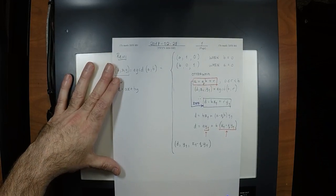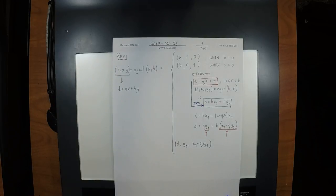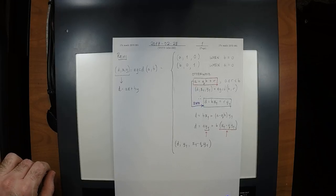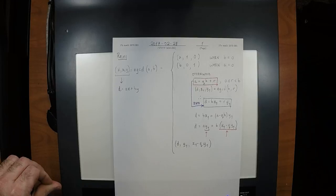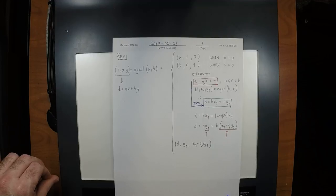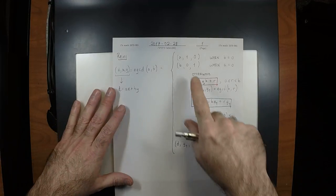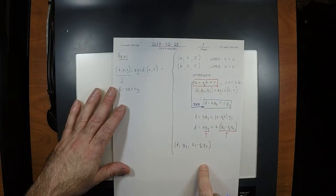The general idea is: correctly identify the base case. You will reach the base case because the Euclidean algorithm always terminates — you'd need a number theory class to prove it, but it does. If you accept that you'll eventually reach a base case, then the recursive case is how you build up the Bezout coefficients from the bottom coming back out.